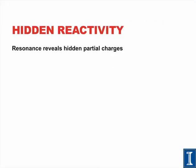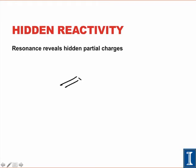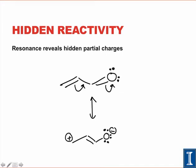A second important application of resonance is hidden reactivity — resonance reveals hidden partial charges in molecules. This molecule has a pi-to-pi-star resonance structure, and what this resonance structure reveals is that the carbon on the end of the pi system is a good electron sink. Without recognizing the resonance, it would have been difficult to pinpoint this carbon as a potential electrophile. In fact, the curved arrows clearly reveal that atom as one of the best electrophiles in the molecule, and a calculation of the molecular orbitals would confirm the largest partial positive charge is located on that carbon atom.